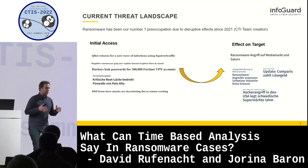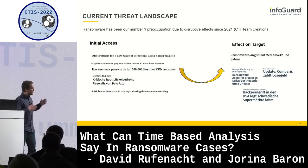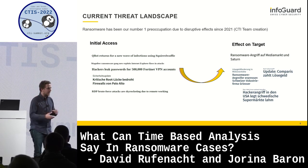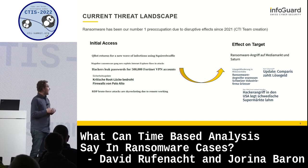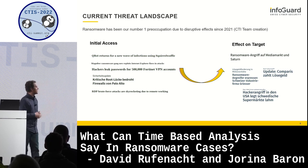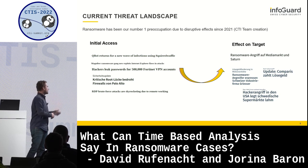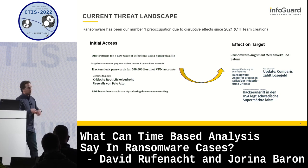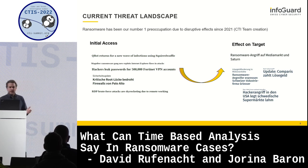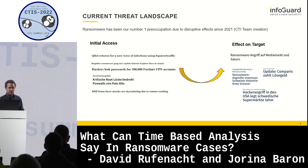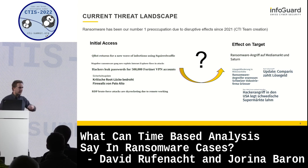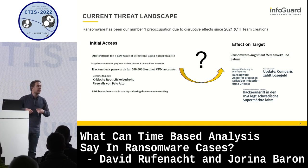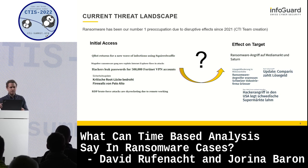One of our big preoccupations as CTI practitioners is that we read a lot - from internet storm and various sources - and we see different types of attackers like Qbot or Quackbot. We see vulnerabilities, and then later we get called when there's an effect on target. The big question is always: what happens, are there linkages between these elements - the initial access vectors reported in the news and the actual effect on target?